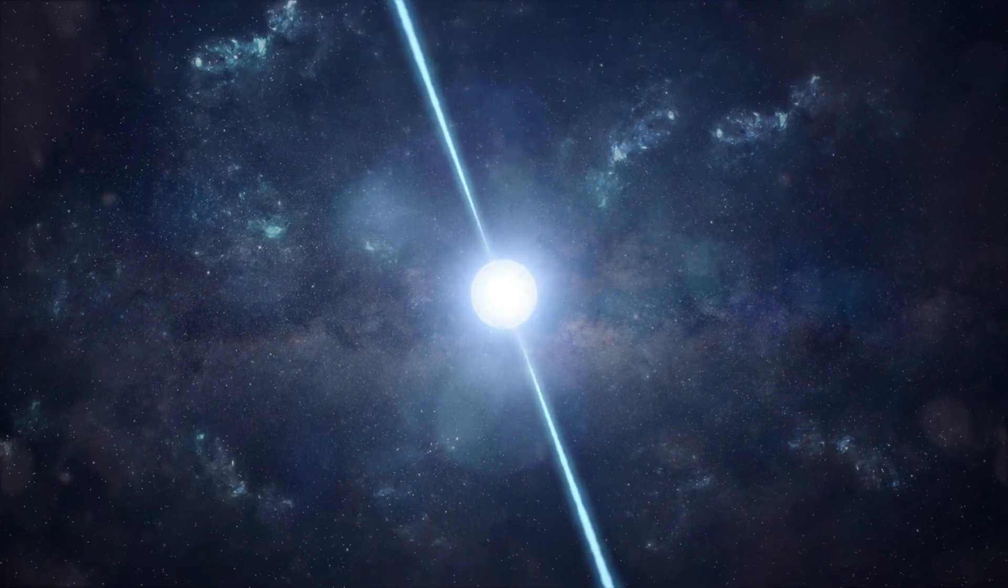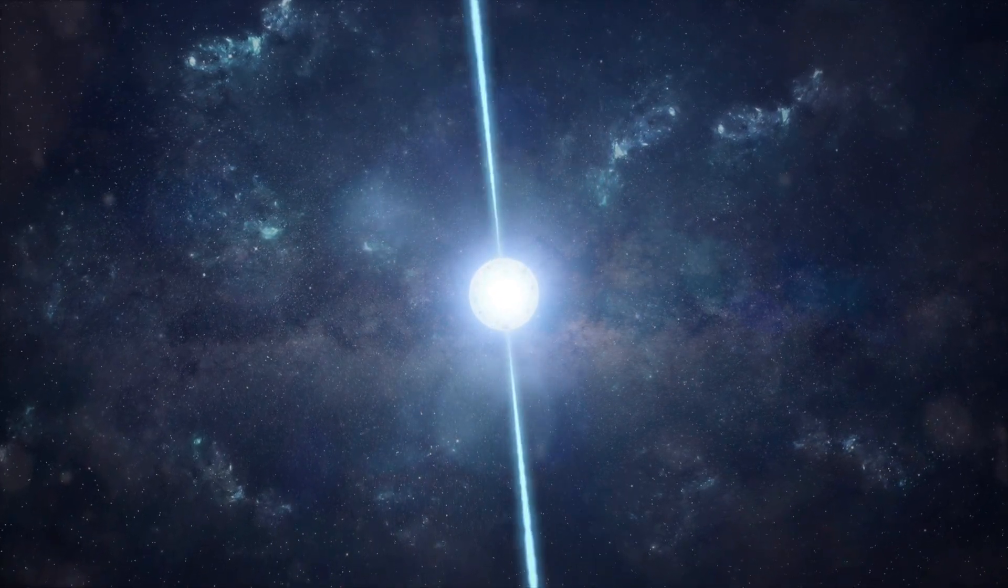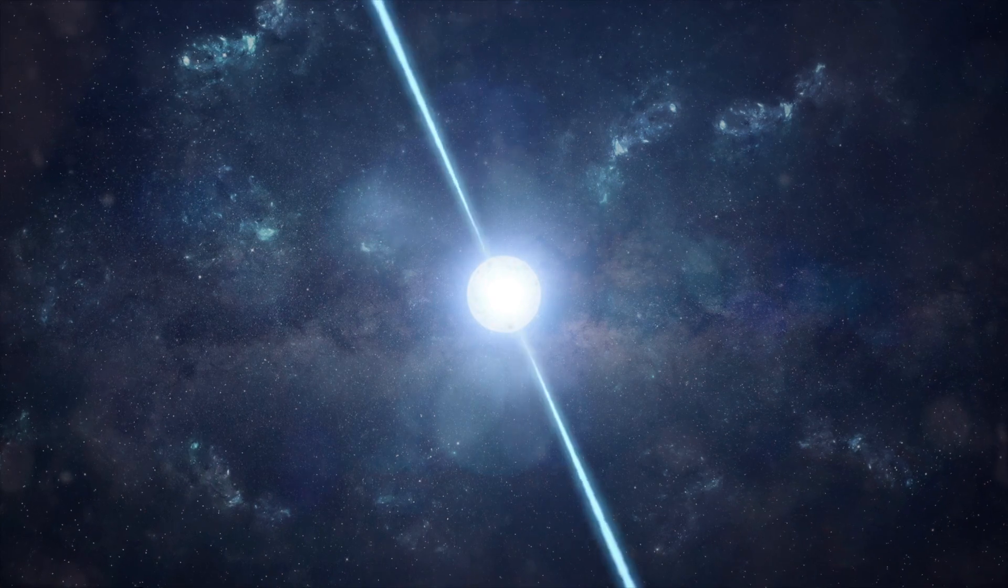Neutron stars can spin incredibly fast on their axis. How fast? Neutron stars can spin as fast as 43,000 times per minute.